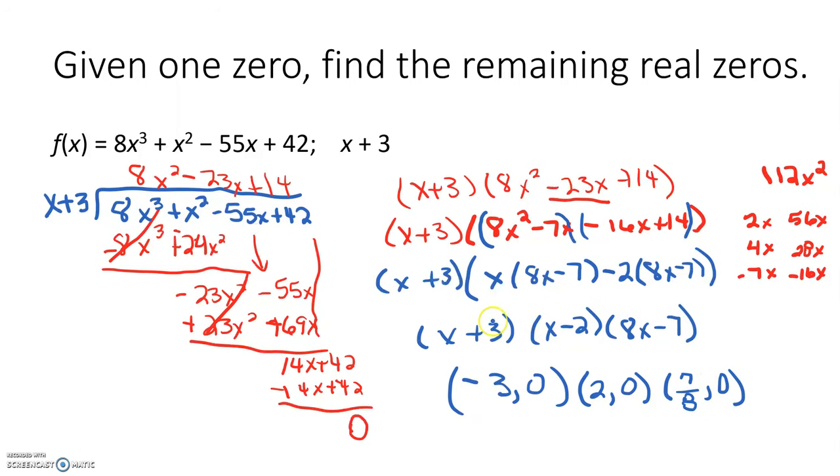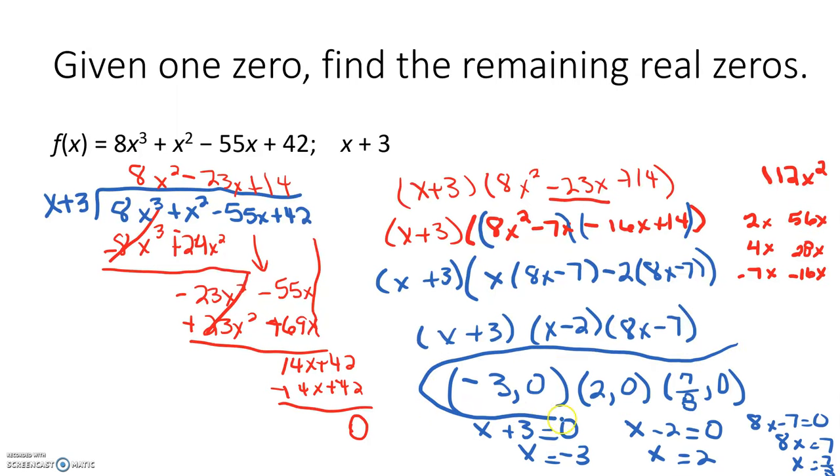To get these values you simply set each factor equal to 0 and solve it. Because if any of those terms equal 0 then I'm multiplying it by 0, which would give me an answer of 0. So 8x - 7 equals 0, 8x equals 7, so x equals 7/8. And this gives me my three zeros for my cubic expression.